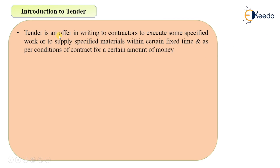It is an offer which is given to the contractor for the execution of work, or it can be supply of materials also. For example, for a particular department, they will only need material for the construction work for any specified work, so they will offer any contractor to supply them material as per the requirement. The contractor has to complete the specified work or supply the material within a certain fixed time.